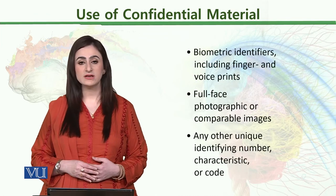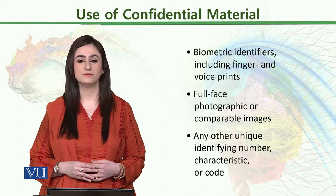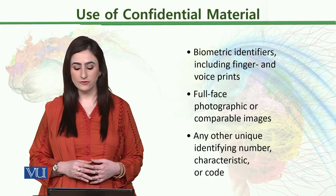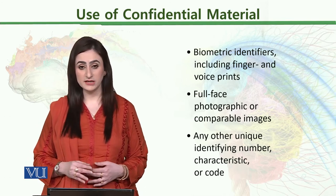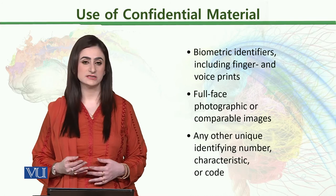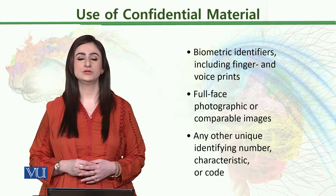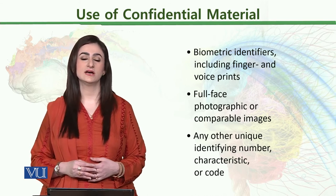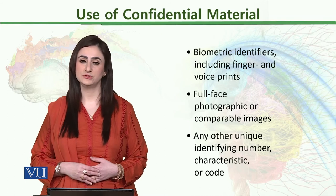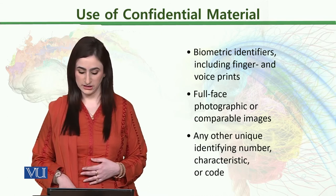Biometric identifiers, including fingerprints and voice prints, are sensitive information. Sometimes you also have full-face photographic or comparable images, as well as any other unique identifying number, characteristic, or code — anything that makes it easier to access or reach out to an individual. Even beyond the listed identifiers, any such information must be removed.